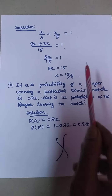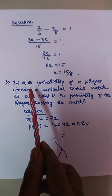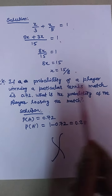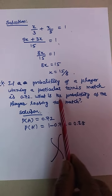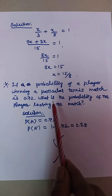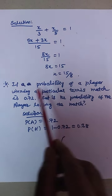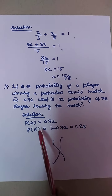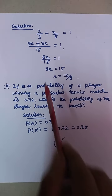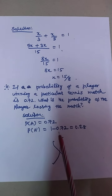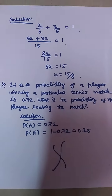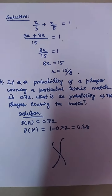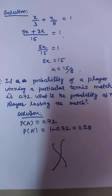Next problem: If the probability of a player winning a particular tennis match is 0.72, what is the probability of the player losing the match? P of A equals 0.72. P of A dash, which is the probability of not winning, equals 1 minus 0.72, which equals 0.28. So the probability of the player losing the match is 0.28.